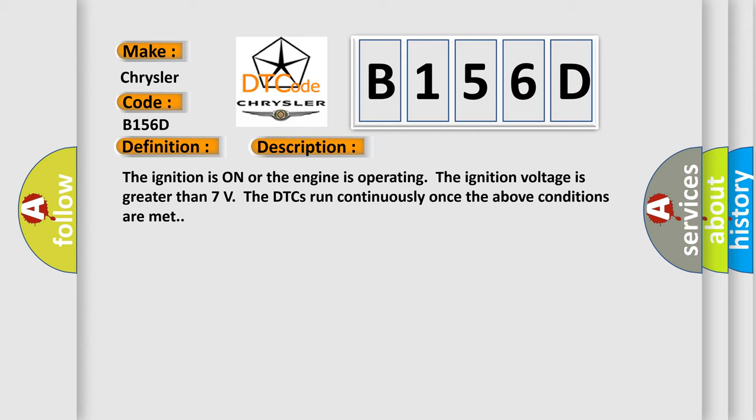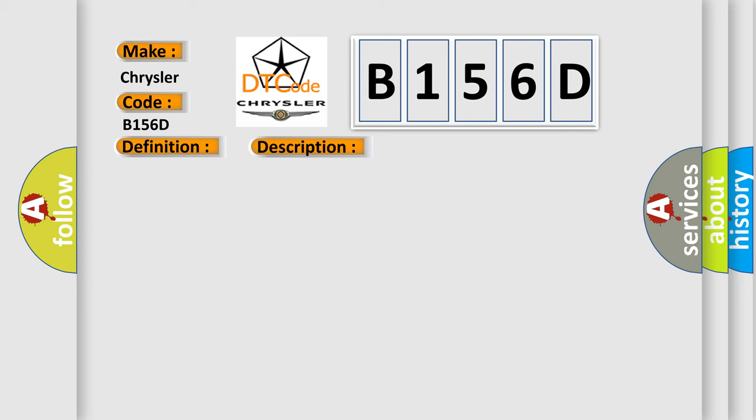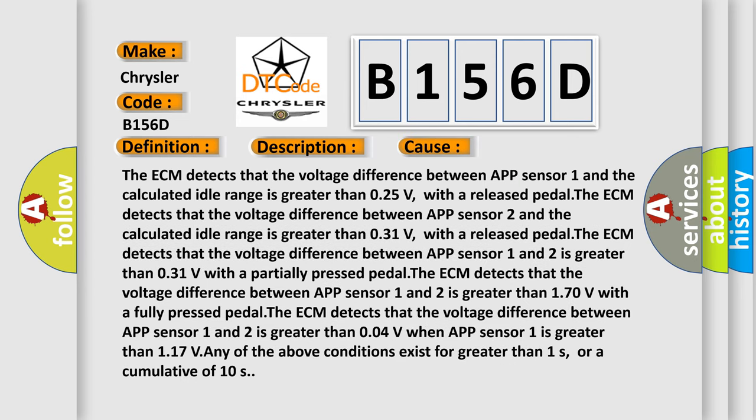This diagnostic error occurs most often in these cases. The ECM detects that the voltage difference between APP sensor 1 and the calculated idle range is greater than 0.25V. With a released pedal, the ECM detects that the voltage difference between APP sensor 2 and the calculated idle range is greater than 0.31V.